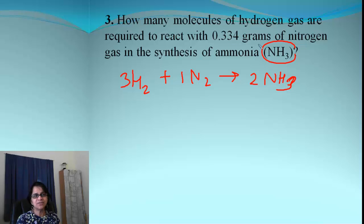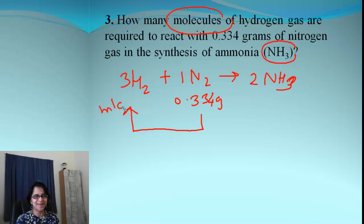Let's see what's given to us. It's 0.334 grams of nitrogen. And our journey begins from here. And the endpoint is how many molecules of hydrogen. So we are going to go to hydrogen. But look carefully.